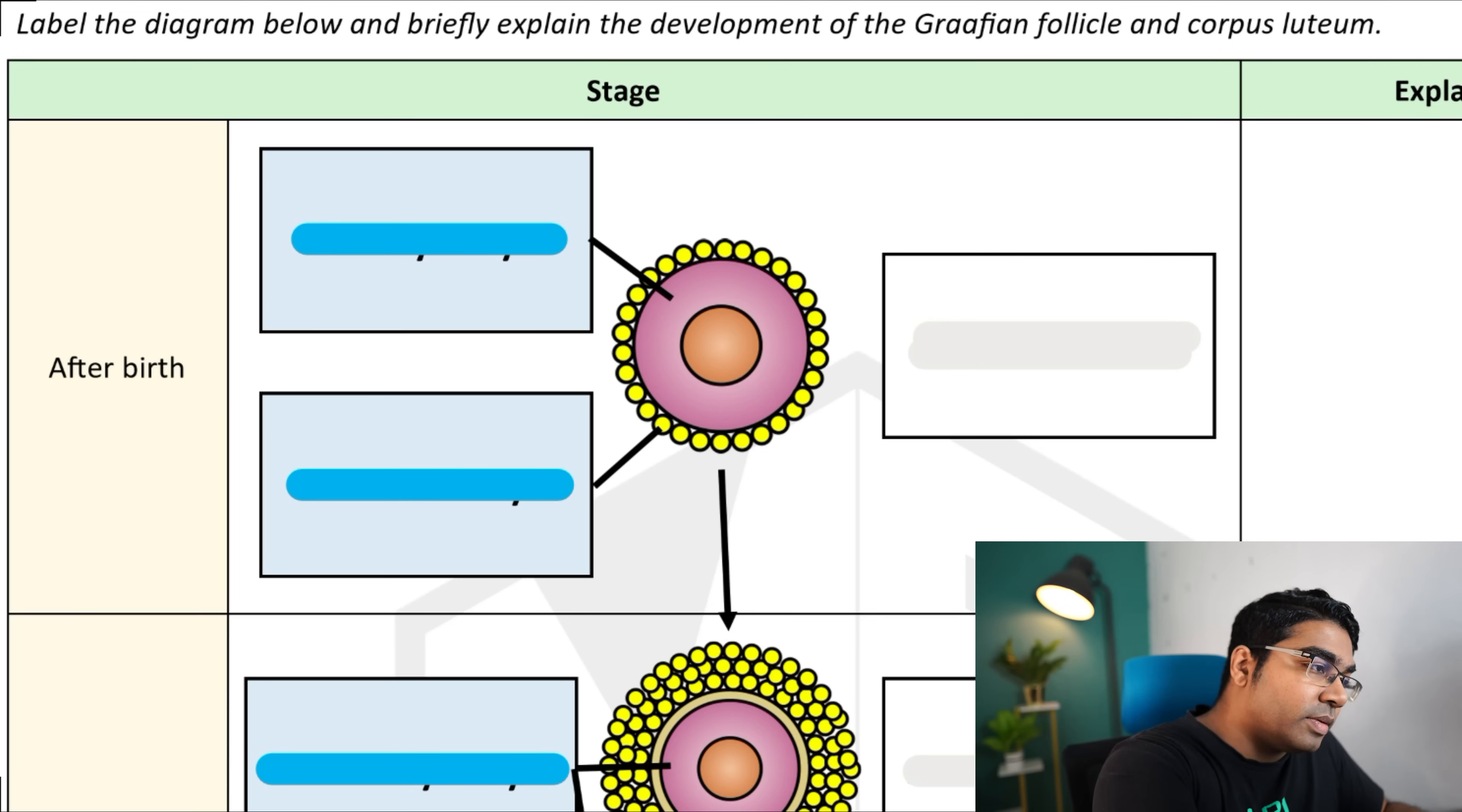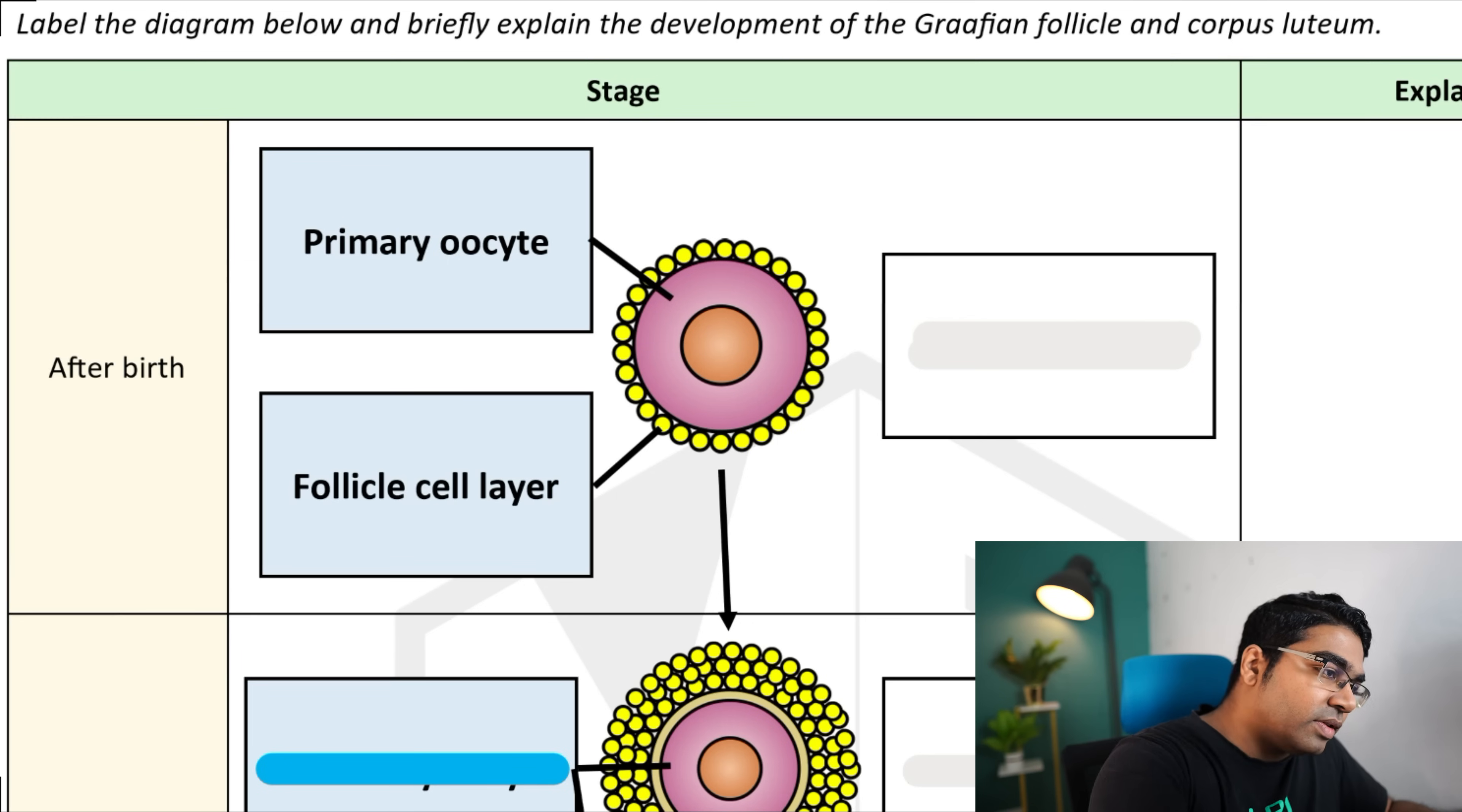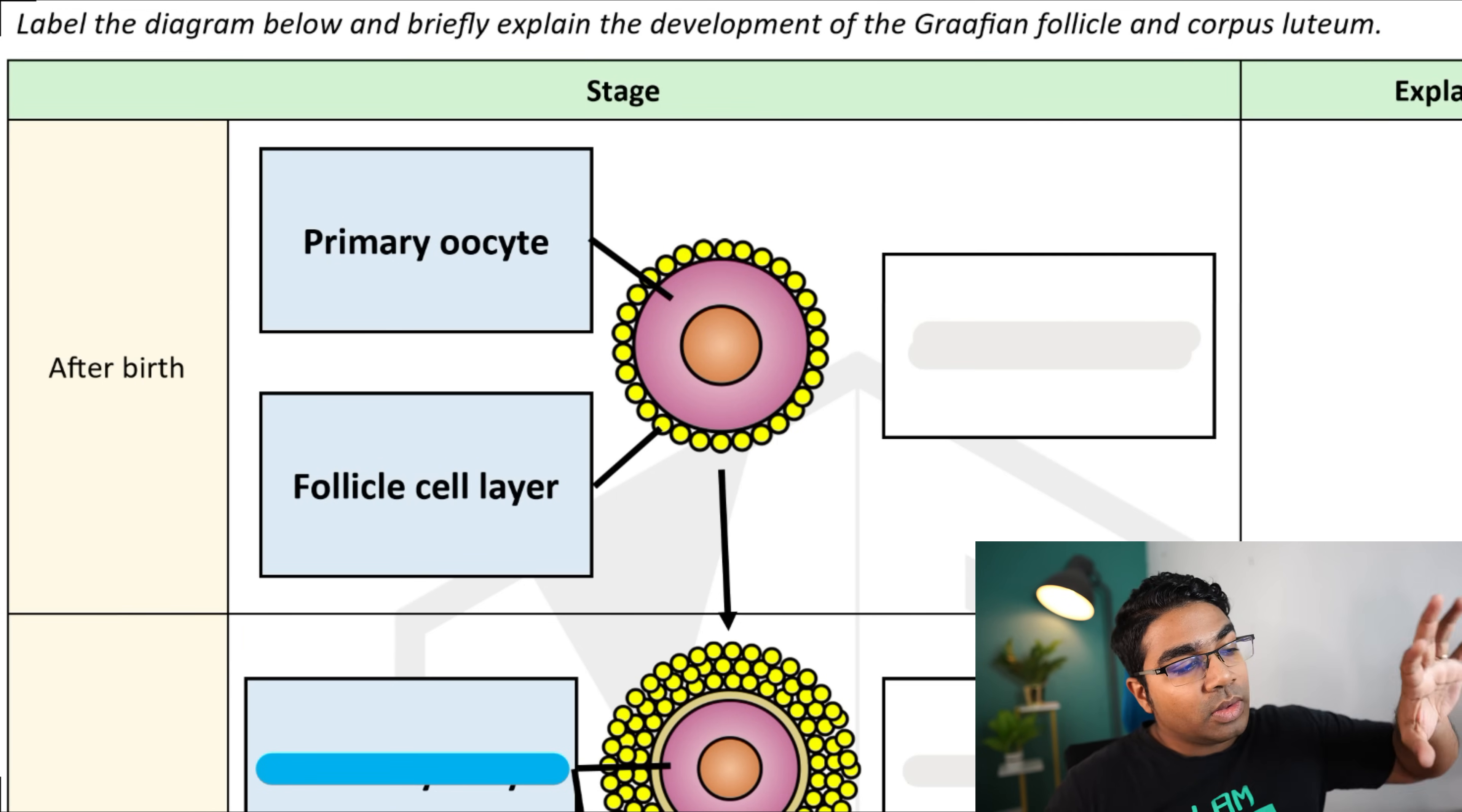Now, we go to what's going on with the follicle development. After birth, we have the primary oocyte, which was stuck at prophase 1. And then we have a layer of cells surrounding this primary oocyte, known as the follicle cells. When one layer of follicle cells surrounds the primary oocyte, the combination of these two things is known as the primary follicle.